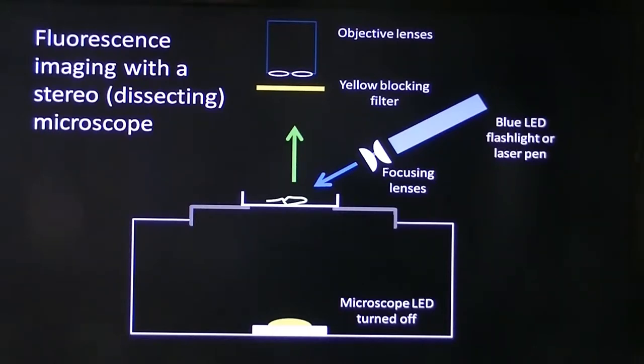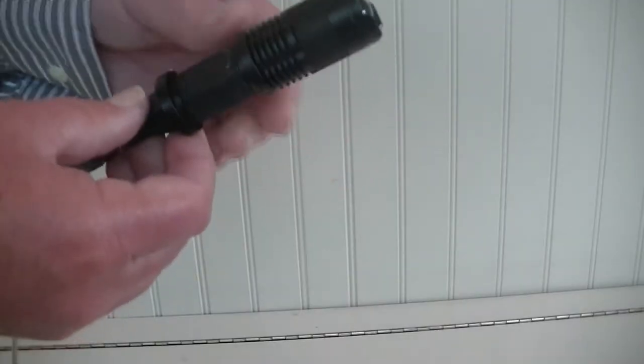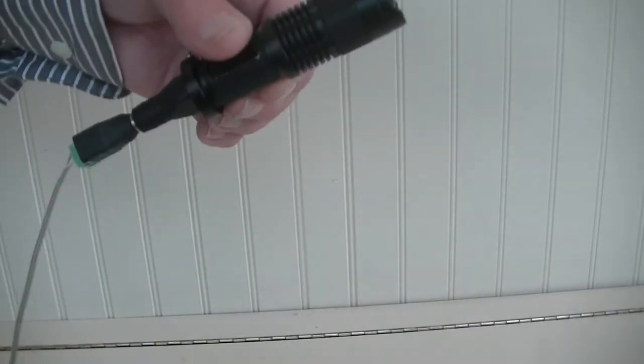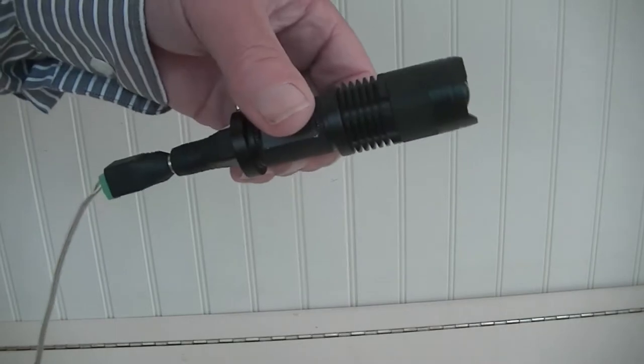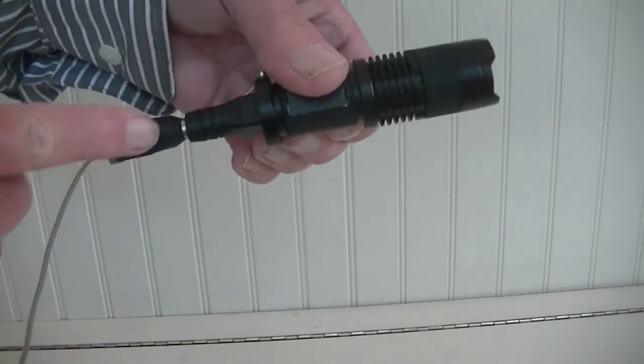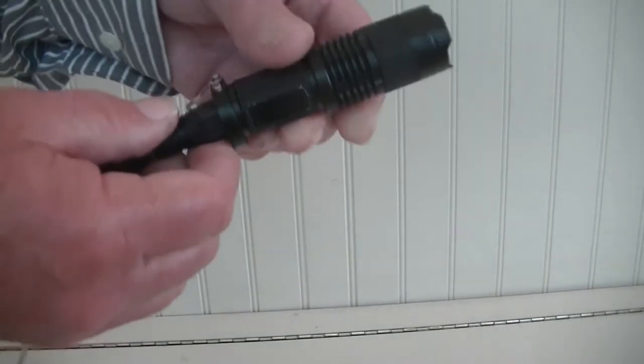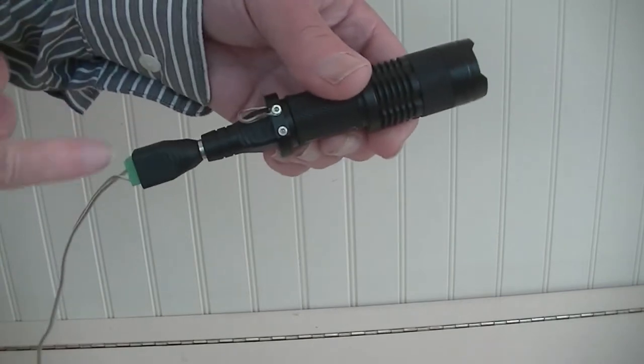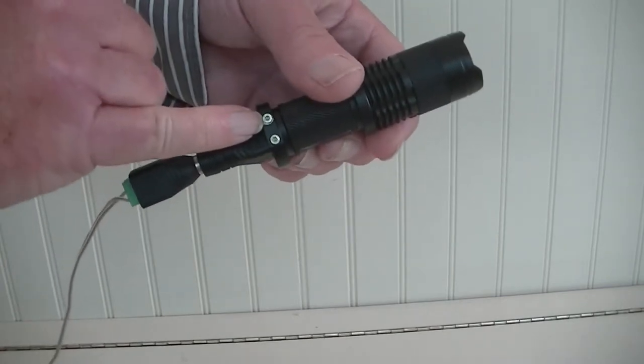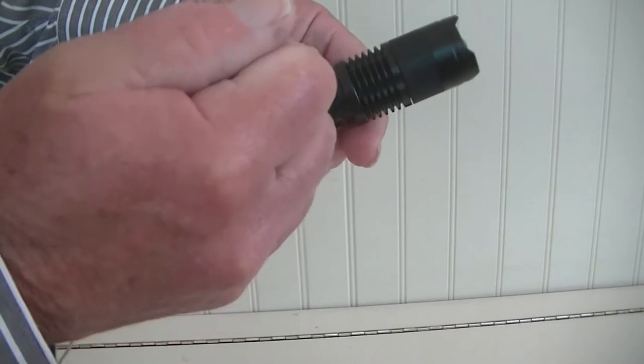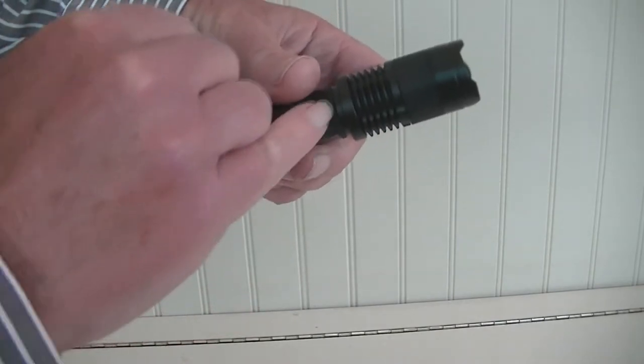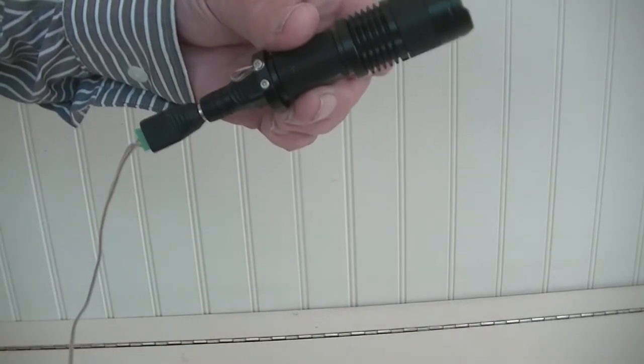This is the 455 nanometer blue LED torch flashlight that I've adapted to drive from the mains. I've simply connected one lead to the outside of the case and the other lead to the terminal near the light head and just put three volts across it, and you get a nice bright blue light out.